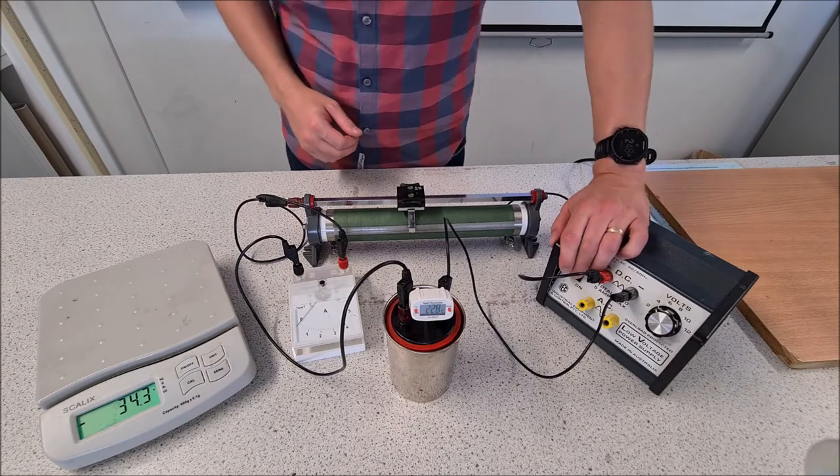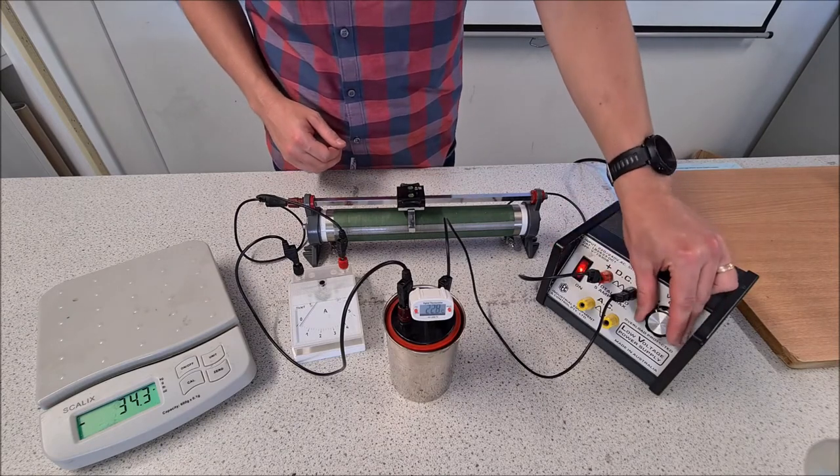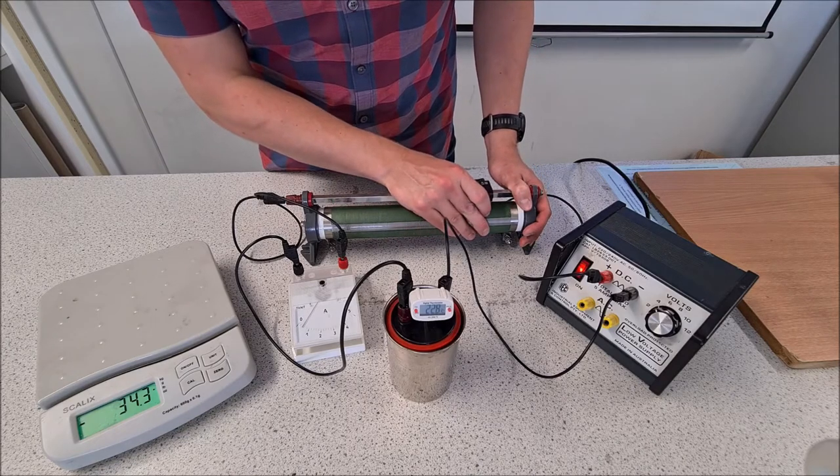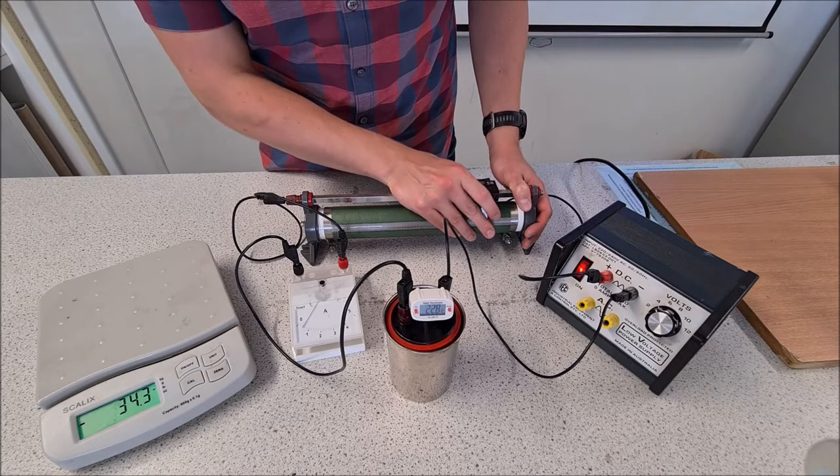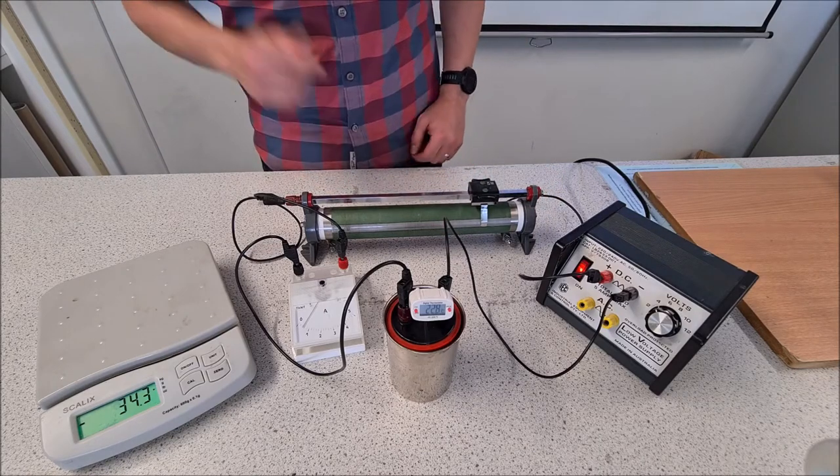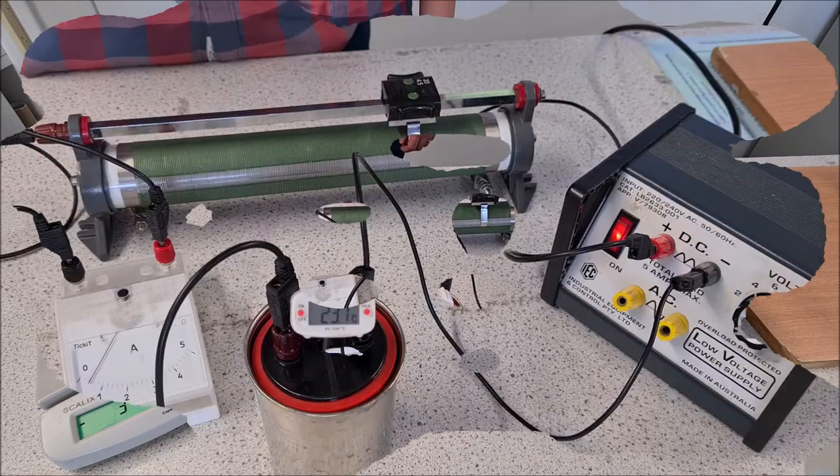Okay, so now I'm going to turn on the power supply. Change the rheostat until I get half an amp, and I've got about half an amp there. I'm going to leave this for five minutes, so we start the clock there for five minutes.